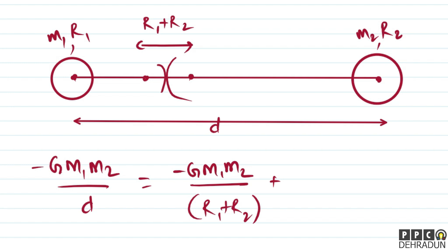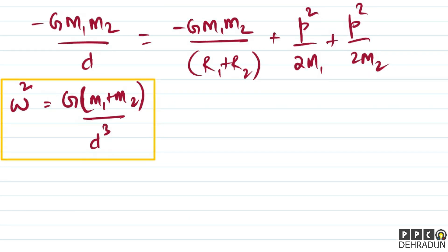We know the relation between momentum and kinetic energy. So the kinetic energy of the first star is p²/2m1, and the second is p²/2m2. We had assumed d ourselves, so we'll substitute the value of d obtained from the centripetal force equation back in here, and then we will get p.